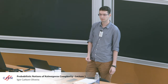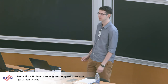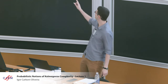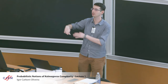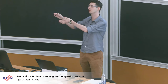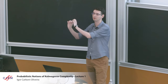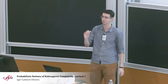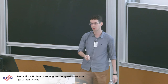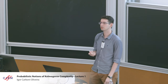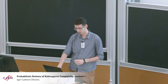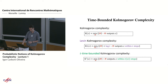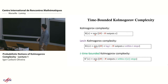The universal machine is time-efficient, so the overhead with respect to any other machine is at most polylog factors in the running time. That's Levin's definition. Now let me introduce another definition.